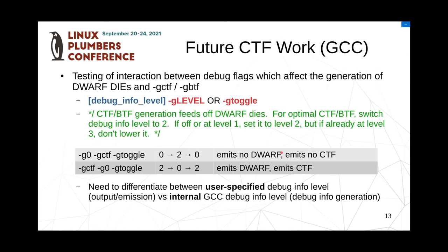Let's look at an example to make it clear. G0, GCTF, Gtoggle — the debug level hops from 0 to 2 to 0. When the user said G0, GCTF, Gtoggle, she probably meant: give me some DWARF but don't give me CTF. But what ends up happening is no DWARF, no CTF. The solution here seems to be that we need to differentiate between how much DWARF we internally generate versus what the user wants emitted, because now you have internal consumers of DWARF DIEs. Any feedback or challenges you see on this problem would be appreciated.